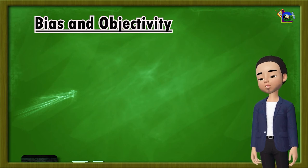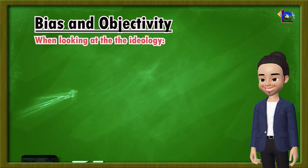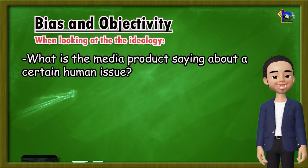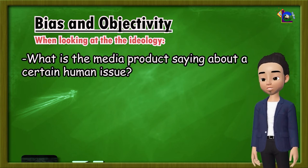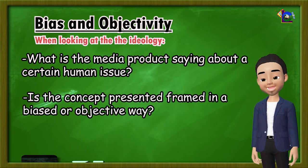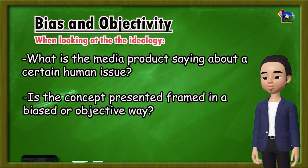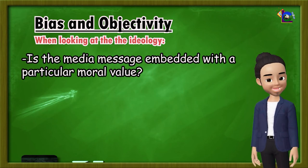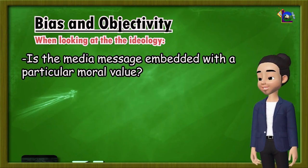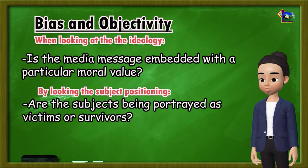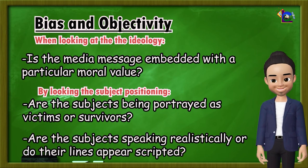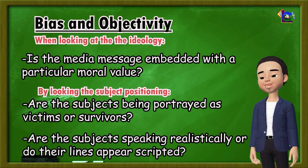Fourth is bias and objectivity. Looking at the ideology, ask yourself: What is the media product saying about a certain human issue? Is the concept presented framed in a biased or objective way? Is the media message embedded with a particular moral value? And by looking at the subject positioning, are the subjects being portrayed as victims or survivors? Are the subjects speaking realistically or do their lines appear scripted?